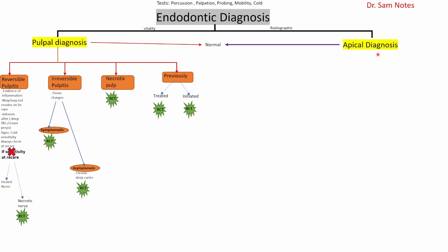Apical diagnosis is based on radiographic images. It can be normal — no changes, no root canal treatment needed. The first type in apical diagnosis is condensing osteitis, which occurs when a low-grade infection causes the body to form a radiopaque lesion at the periapex. Importantly, condensing osteitis does not need root canal treatment.